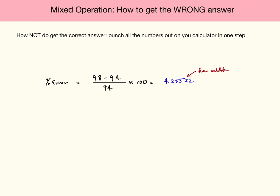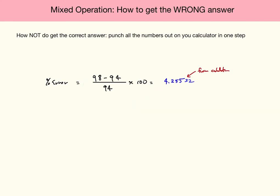The first thing we'll talk about is how not to solve it. A way to almost guarantee that you're going to get it wrong is to take all of these digits in your calculator and multiply them out at one time. So when I take 98 and subtract 94, then divide that by 94 and multiply it by 100, I get the digits 4.25532. The good news is these are the correct digits. The bad news is it's the wrong number.